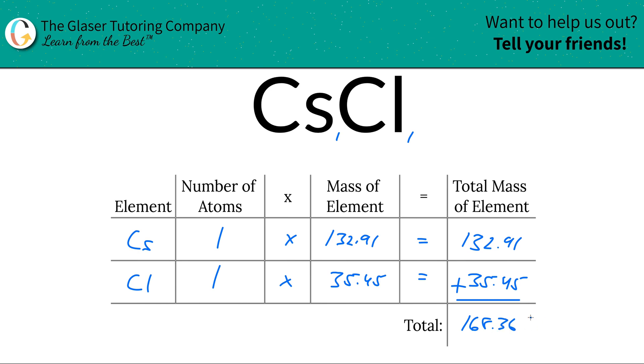Since we're solving for molar mass, the units here are in grams per mole. And that's all there is to it. That's the molar mass of cesium chloride. Thanks for watching.